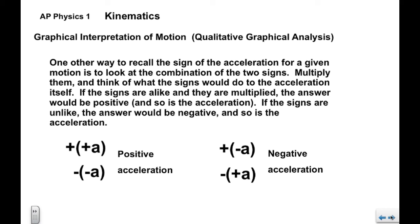One way to recall the sign of the acceleration for a given motion is to look at the combination of the two signs and multiply them. If the signs are alike — positive times positive, or negative times negative — the result is positive, meaning positive acceleration. If the signs are unlike — plus-minus A or minus-plus A — the result is negative acceleration. This is one easy way to keep them straight.